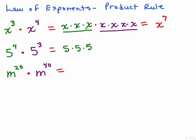5 to the fourth means I need to have four factors of 5 and 5 cubed means I need to have three factors of 5.